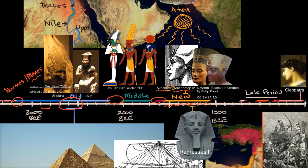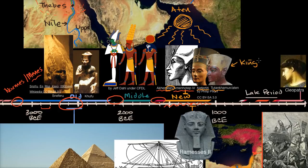Akhenaten is also noted for giving a lot of power to his wife, Queen Nefertiti, who some say was second in command or even co-ruled alongside him. After his death, his son Tutankhamun — King Tut — came to power as a child pharaoh and died at age 18. He's famous because his tomb was found in relatively good condition, making him a popular part of the historical imagination.